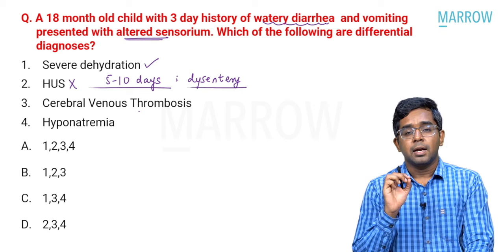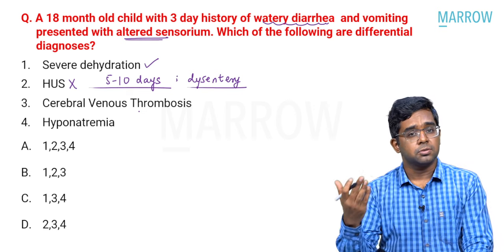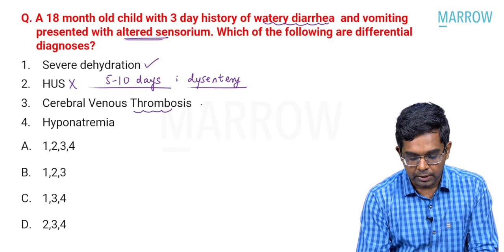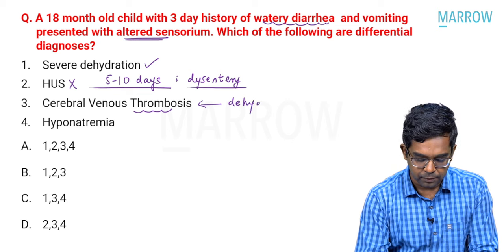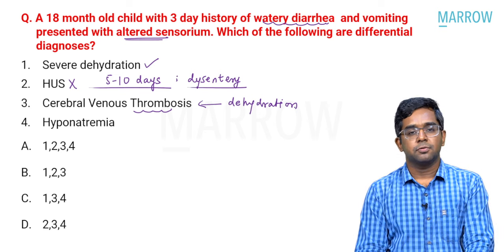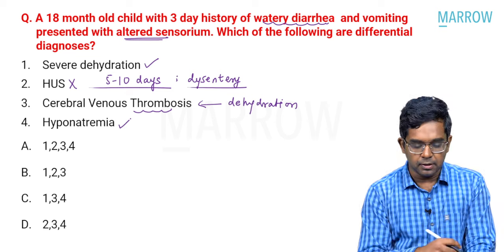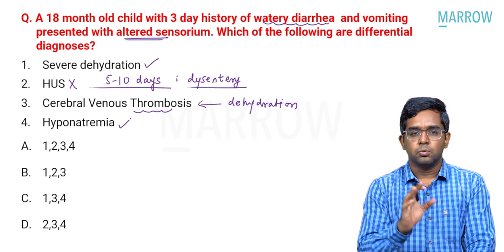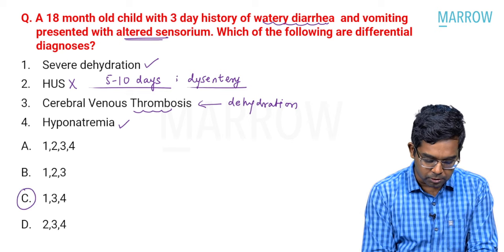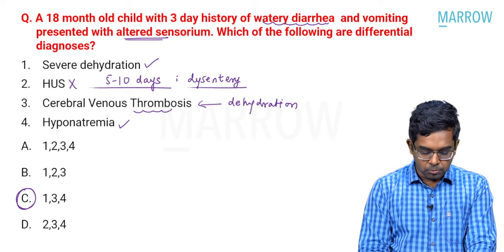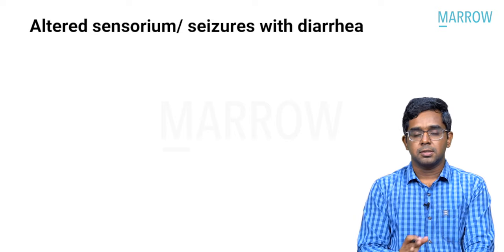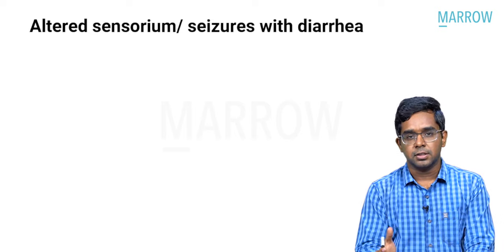Cerebral venous thrombosis can definitely be associated with altered sensorium and seizures; the reason is severe dehydration, which can lead to thrombosis. Hyponatremia of course is also a possibility — it can be associated with altered sensorium and diarrhea. So the best option would be 1, 3, and 4 — corresponding to option C. Whenever a child has diarrhea along with altered sensorium or seizures, keep these conditions as differentials in your mind.